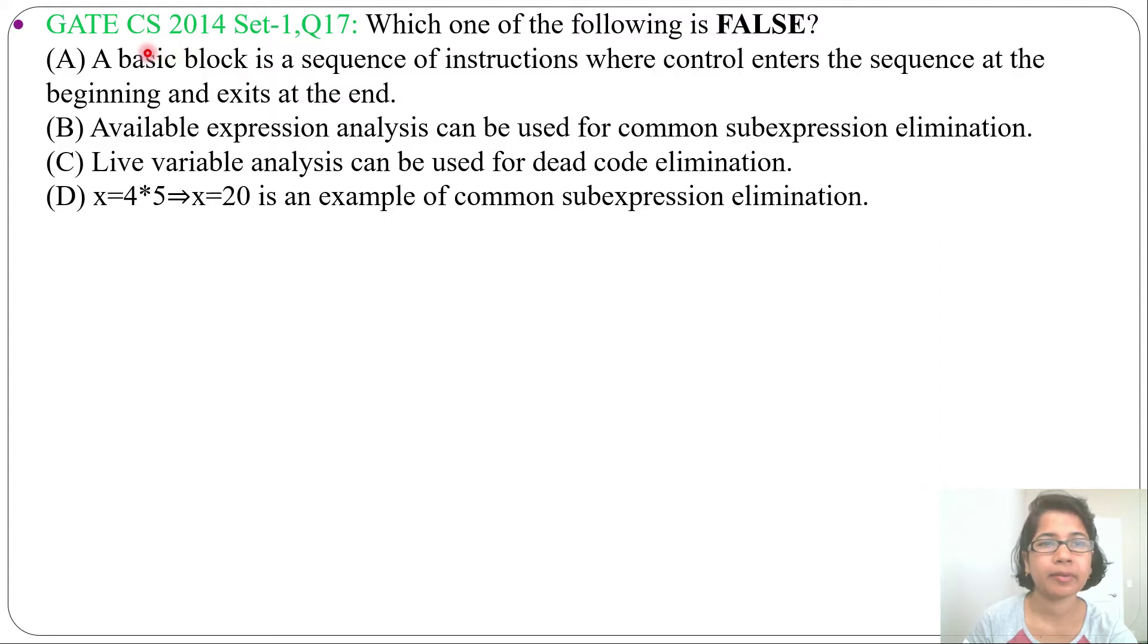Hi, let's solve one previous question on compiler. This question was asked in GATE CS 2014 Set 1, Question Number 17. It is a combination of data flow analysis and intermediate code optimization. Four statements are given and it is asking which one of the following is false.